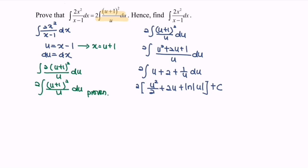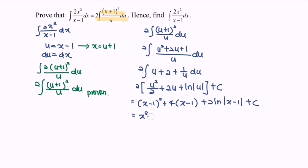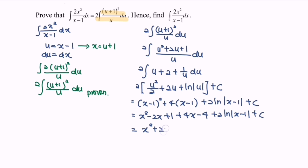Expanding and substituting back u = x − 1, we get (x−1)² + 4(x−1) + 2 ln|x−1| + c. Expanding further: x² − 2x + 1 + 4x − 4 + 2 ln|x−1| + c. Simplifying, the final answer is x² + 2x − 3 + 2 ln|x−1| + c.